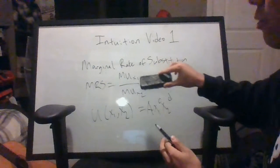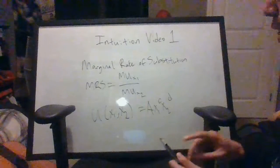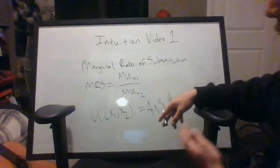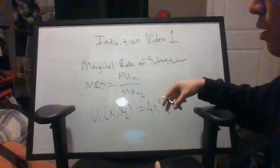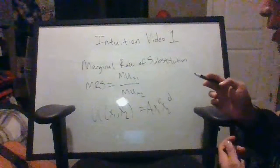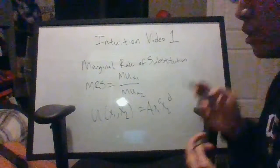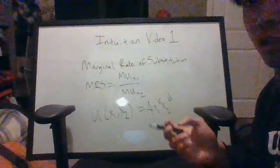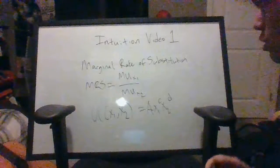So we have this framework for marginal rate of substitution, and assuming that x1 and x2 are both goods, which they are in this case, you're going to want as much of these as possible. And we know that in the real world, and this is why economics is a field, we're constrained by what we have.